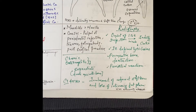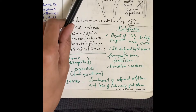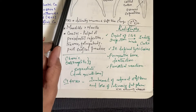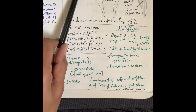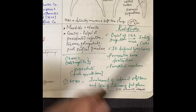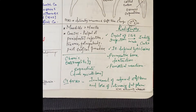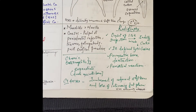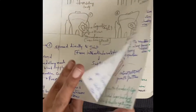Today we'll be discussing radiolucent jaw lesions Part 4. In this we'll be discussing radiolucent lesions with ill-defined margins, non-odontogenic lesions. First is osteomyelitis; we'll discuss about the mechanism.